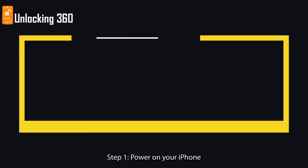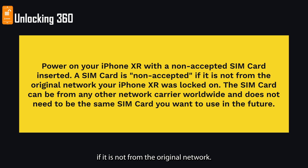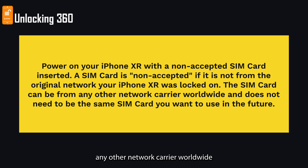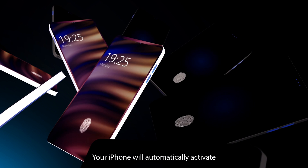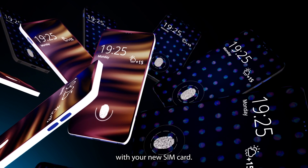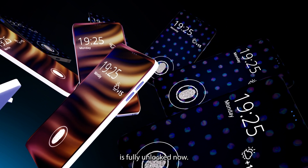Step 1: Power on your iPhone with a non-accepted SIM card inserted. A SIM card is non-accepted if it is not from the original network your iPhone was locked to. The SIM card can be from any other network carrier worldwide and does not need to be the same SIM card you want to use in the future. Step 2: Your iPhone will automatically activate with your new SIM card, which means your iPhone is fully unlocked.